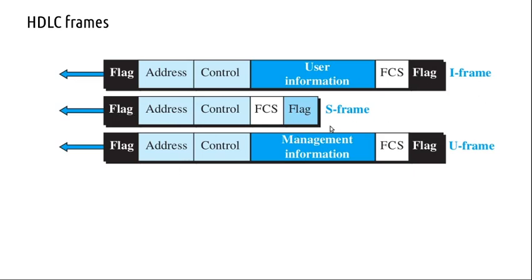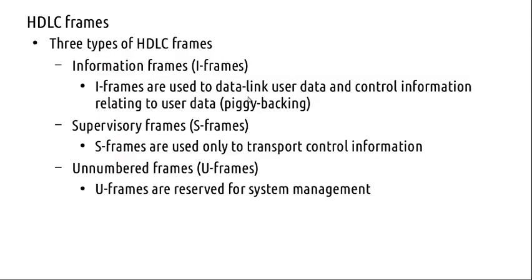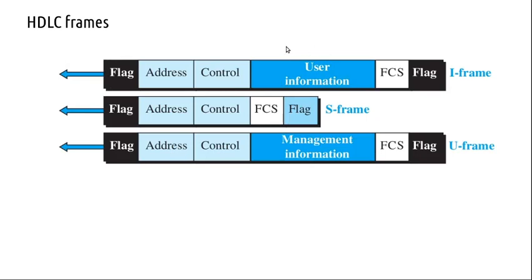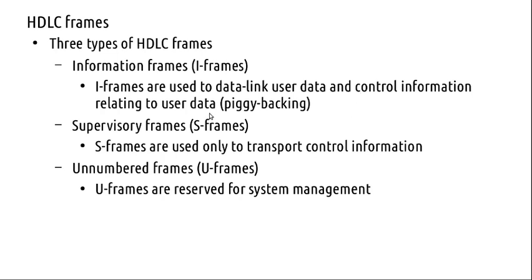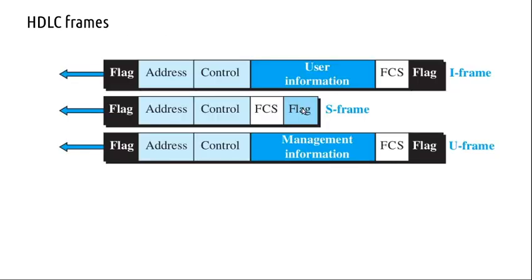The I-frame, or information frame, contains user data. It has a start and end flag with a specific sequence, then an address field which is the destination address. Then there is a control information field that manages things like piggybacking. The flag sequence contains six ones — a bit sandwiched between two zeros — which identifies both the beginning and end of the frame.